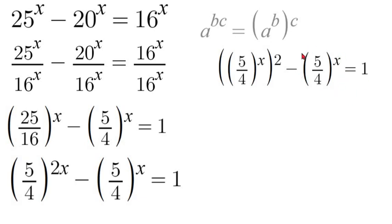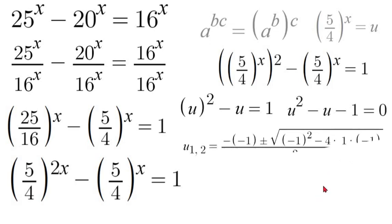Now that both of these are 5 over 4 to the power of x, we can substitute 5 over 4 to the power of x for the letter u and so we'll have u squared minus u is equal to 1. We'll subtract 1 and we'll have u squared minus u minus 1 is equal to 0 which we should recognize by now that this is a great situation to be in because we can now use the quadratic formula to solve for 0.